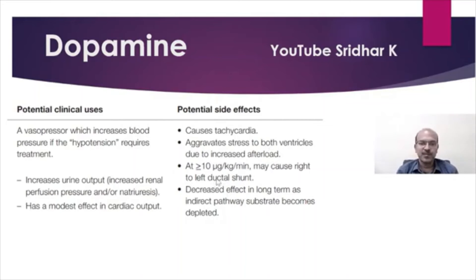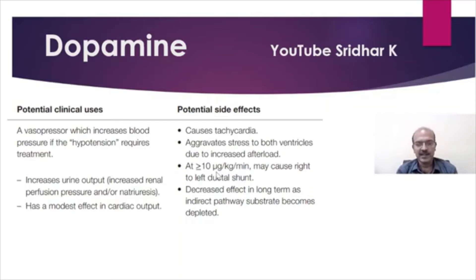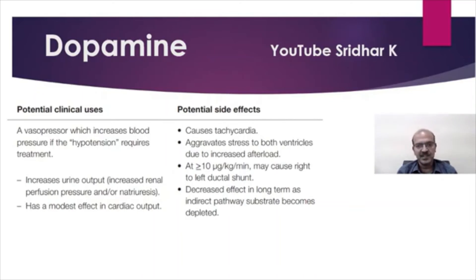At a dose of more than 10 microgram per kg per minute, dopamine may aggravate pulmonary hypertension, so it is an important drug to avoid in a baby with pulmonary hypertension. The same applies to babies with perinatal asphyxia because of increased pulmonary vascular resistance in this group as well. So for meconium aspiration syndrome, PPHN, or perinatal asphyxia — avoid dopamine.